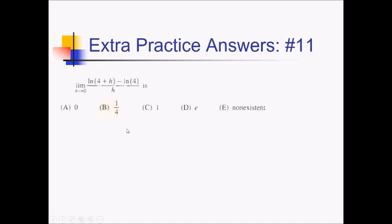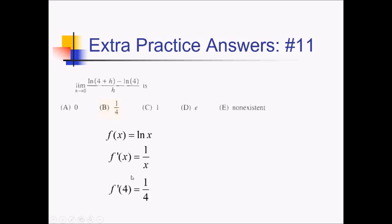On this problem, we're taking the limit as h approaches 0 of this expression. This is just the limit form of a derivative. The original function is ln of x — whatever the x plus h is being plugged into. Derivative of ln of x is 1 over x, and since 4 is being plugged in instead of x, they want f prime of 4. That's just 1 over 4 — answer choice B.